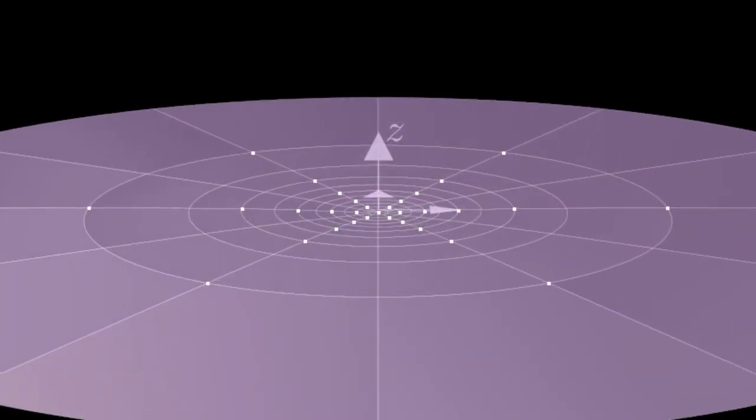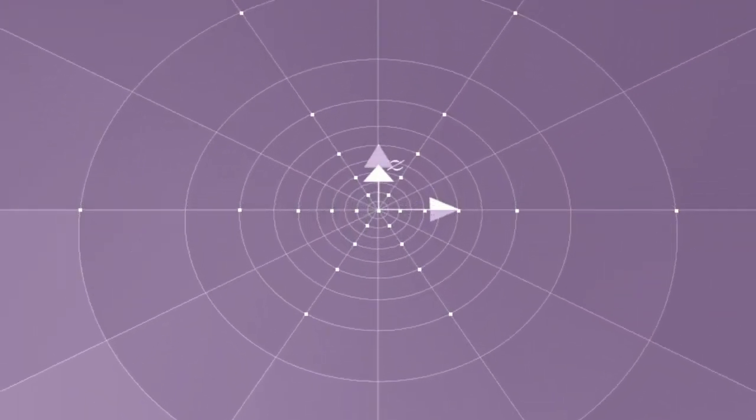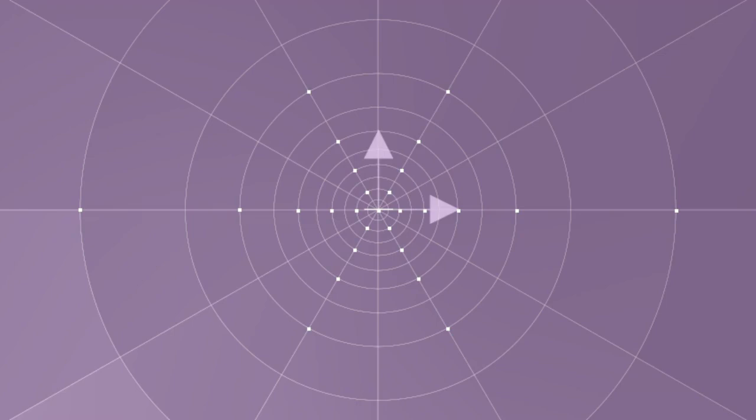Step one, we project the sphere onto the 2D plane. Step two, apply a transformation to the plane. For this example, we'll apply a rotation.